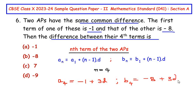So we got the fourth terms of the two APs. Here the difference between their fourth terms is asked, so I'm going to take a_4 minus b_4 is equal to... a_4 we have the value as negative 1 plus 3d minus b_4 is negative 8 plus 3d.